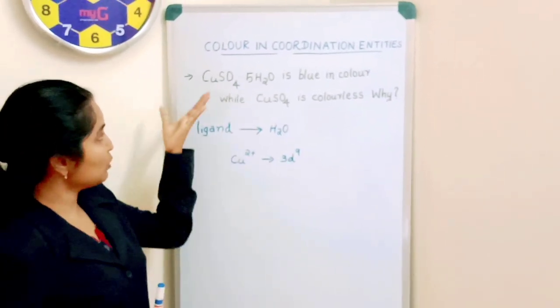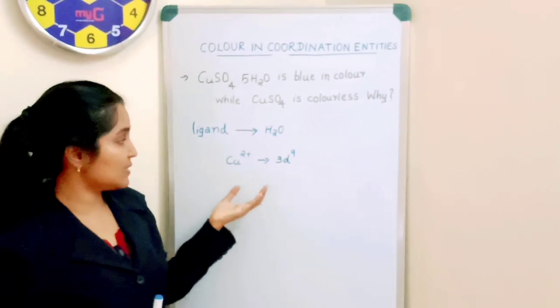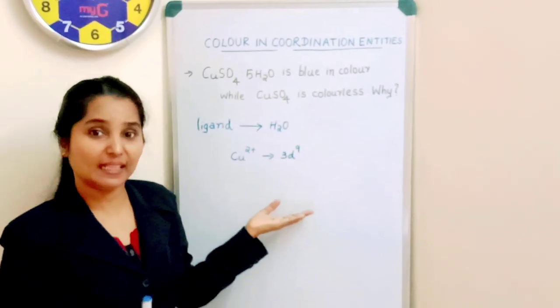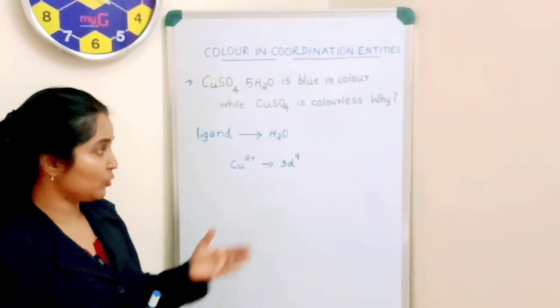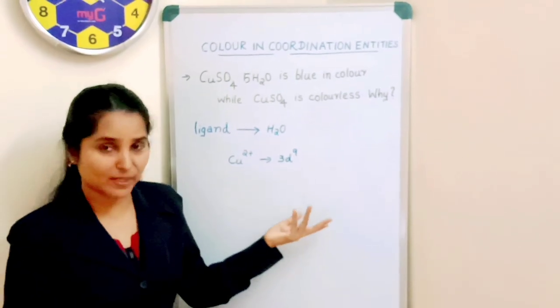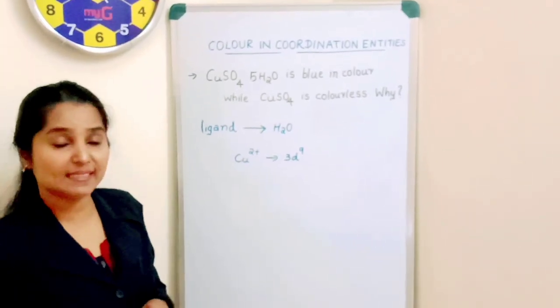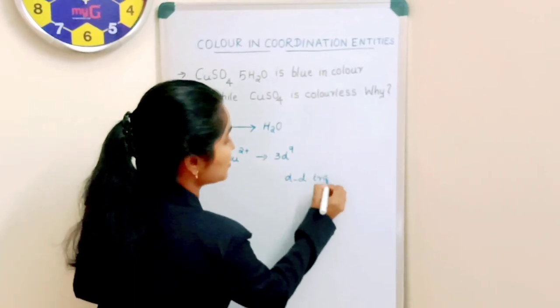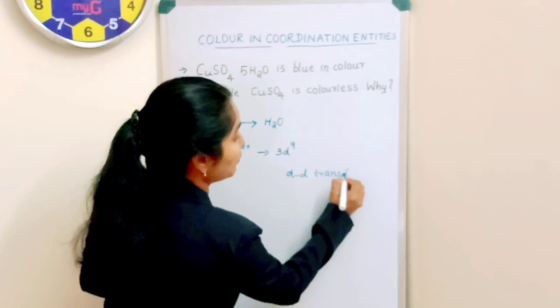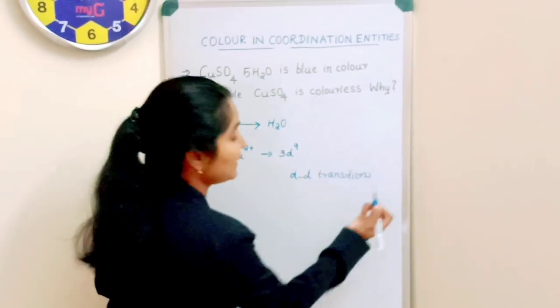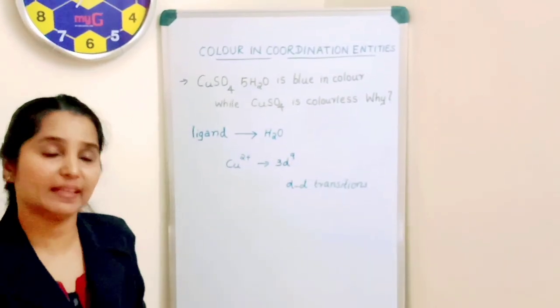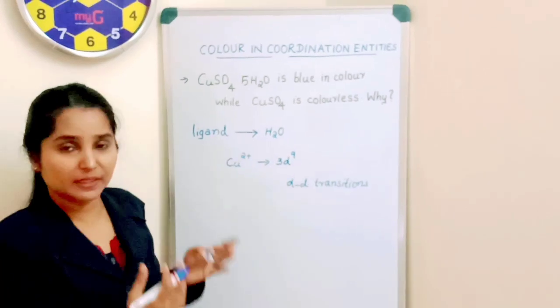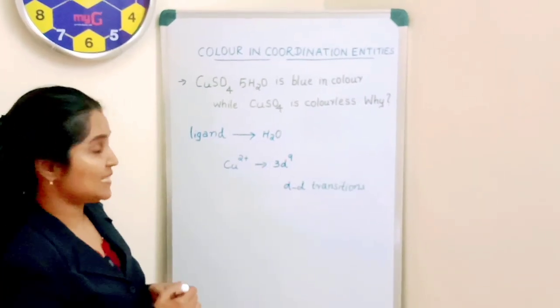Here Co is in +2 oxidation state and will have 3d^9 electronic configuration. There are unpaired electrons present, so it can have DD transition of electrons, and so it appears blue in color. When there is DD transition, this coordination compound can show color.